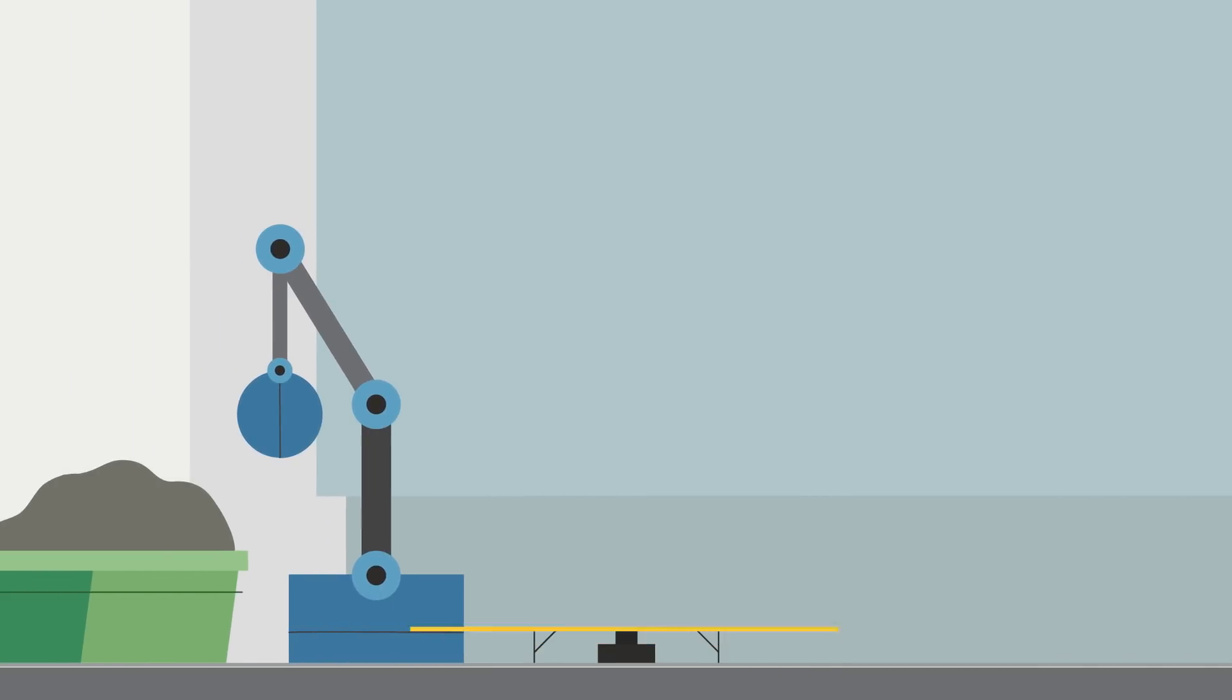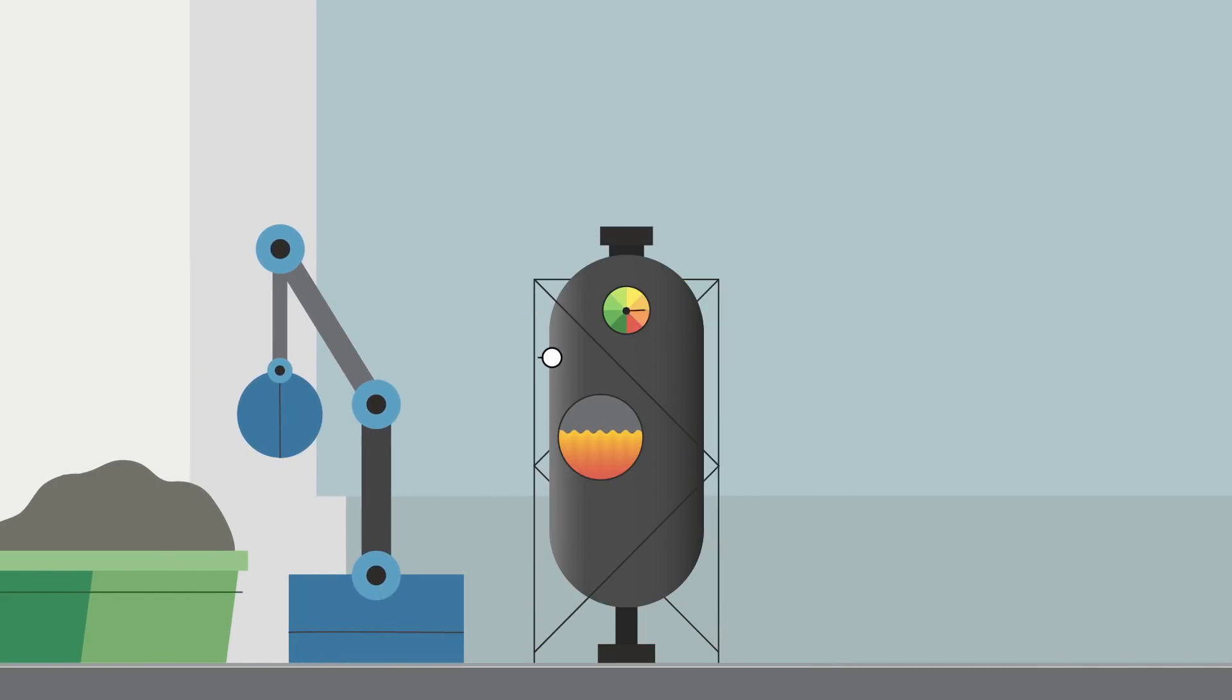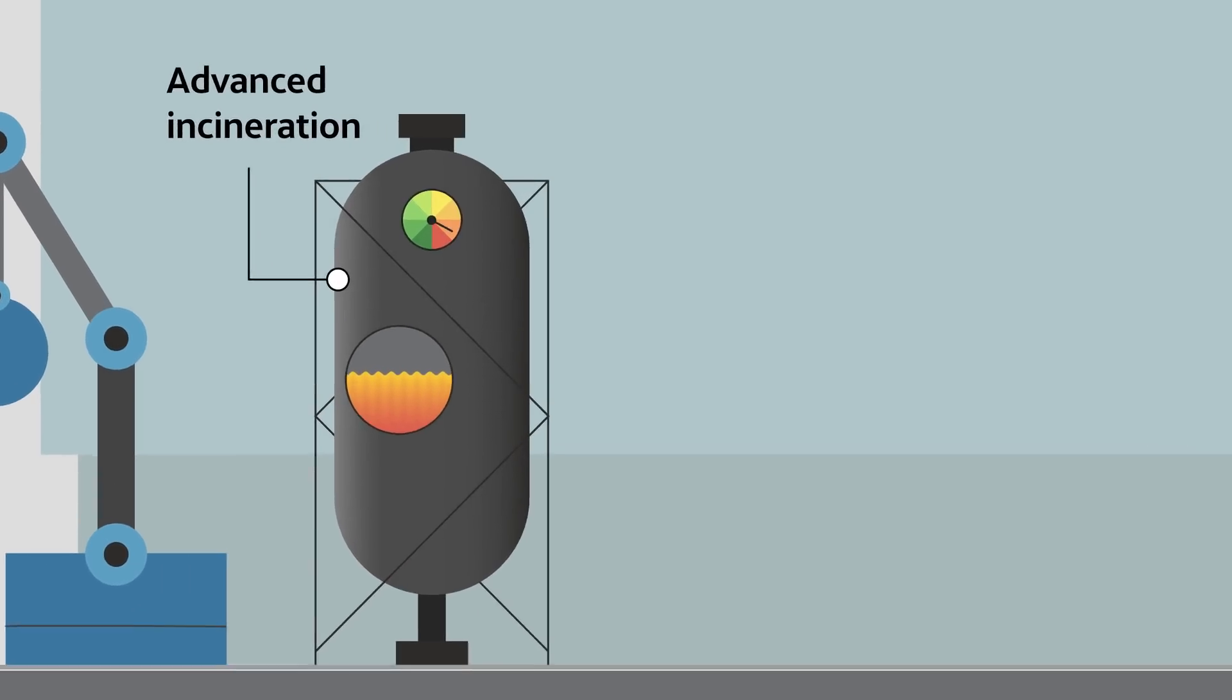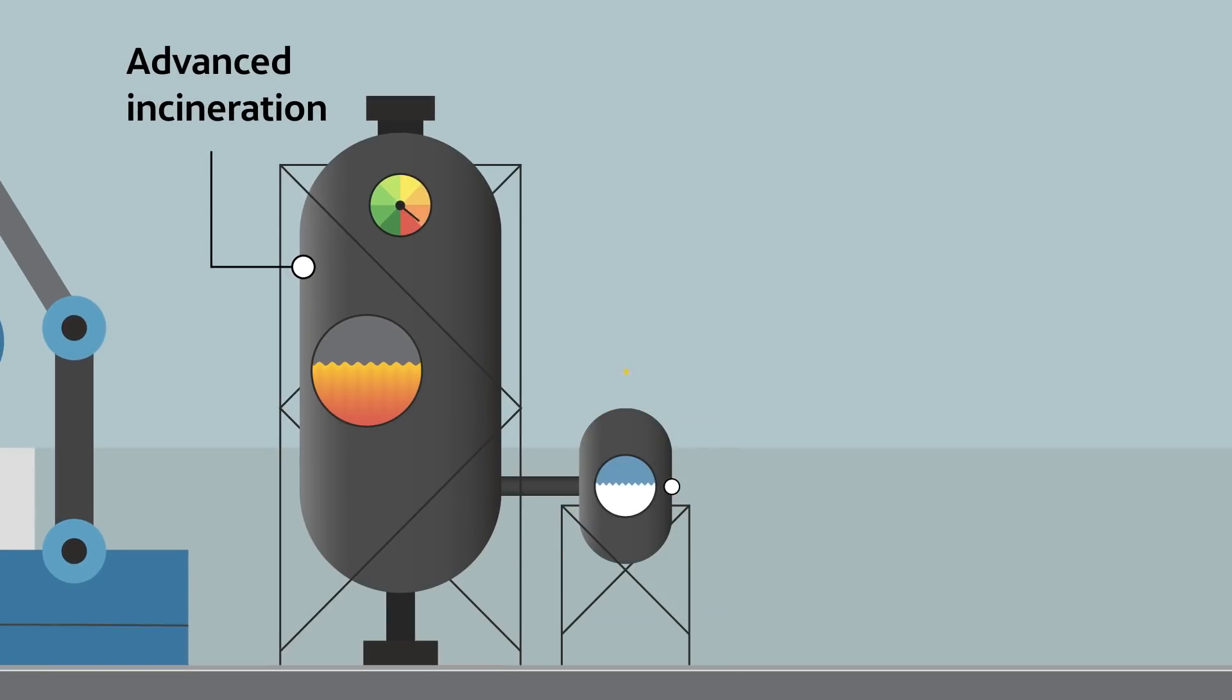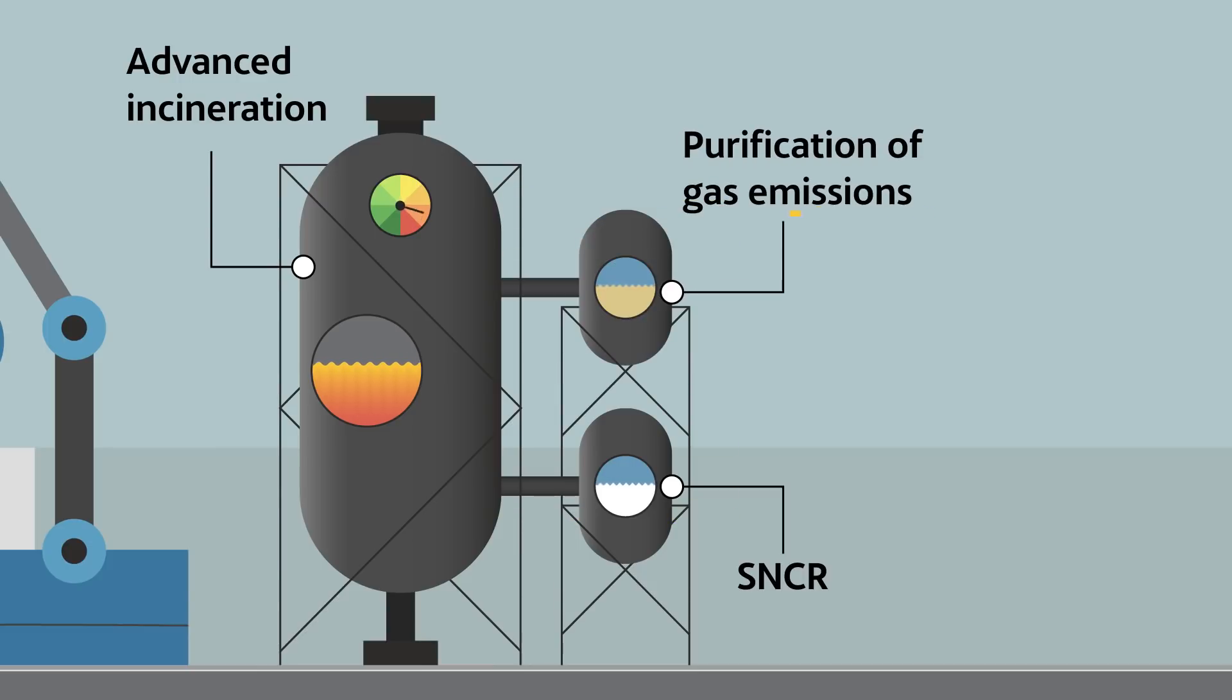Subsequently, the most usual approach for the remaining materials is a thermal treatment, which releases minimal emissions, thanks to the latest technologies. Thus, selective non-catalytic reduction systems inject urea to reduce the emission of nitrous oxide, and an emission purifying steam reduces the amount of pollutants.